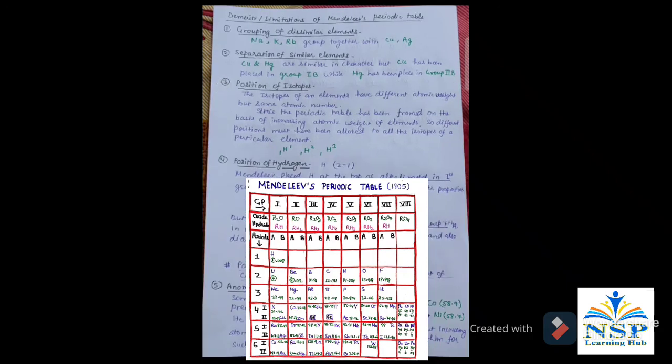Number 3: Position of isotopes. The isotopes of an element have different atomic weight, but same atomic number. Since the periodic table has been framed on the basis of increasing atomic weight of elements, so different positions must have been allotted to all the isotopes of a particular element.